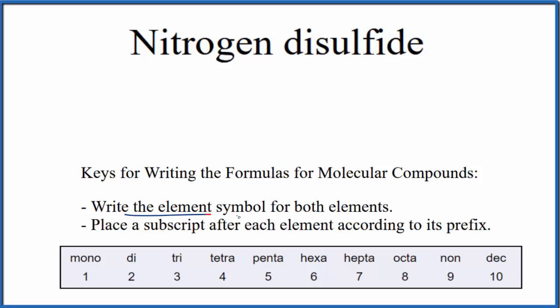First, we're going to write the element symbol for both elements. Nitrogen, that's N, and then sulfide, that's from sulfur, that'll be S.